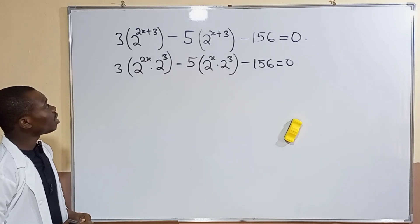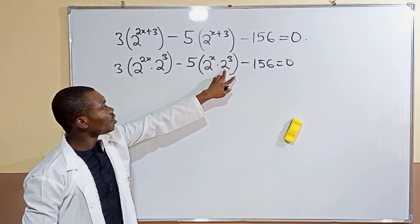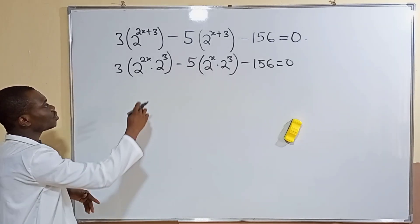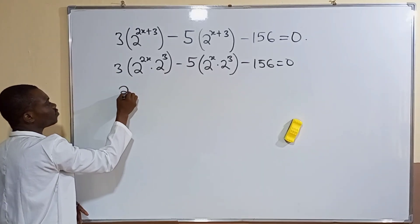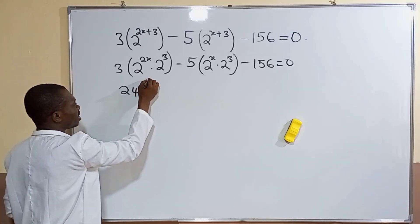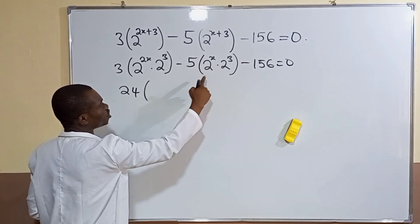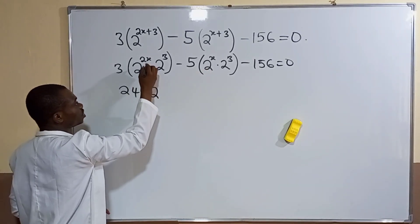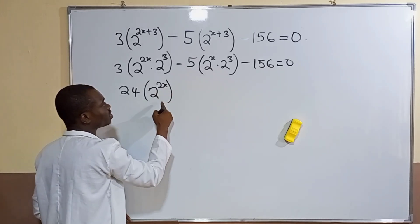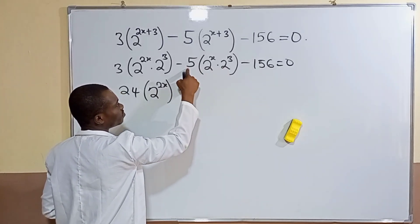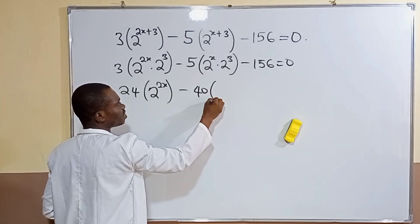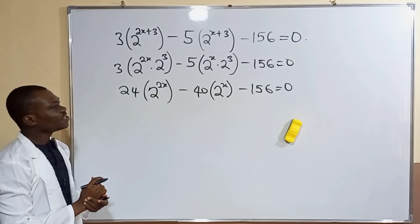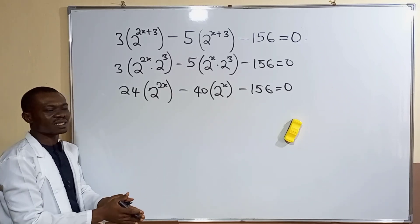Now we simplify: 2 to the power of 3 is 8, and 8 times 3 gives us 24. So the first term becomes 24 times 2 to the power of 2x, and the second term involves 2 to the power of x. By following the steps and rules one after another, we work toward our solution.